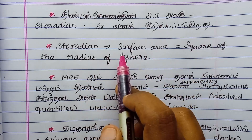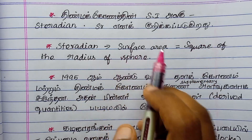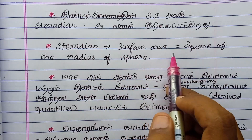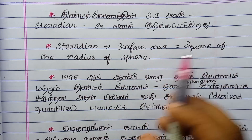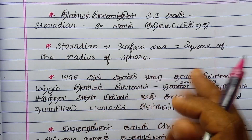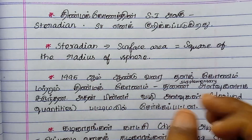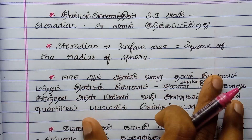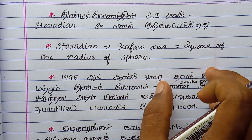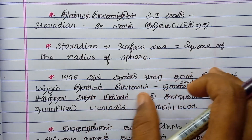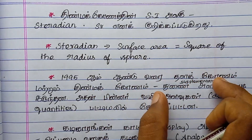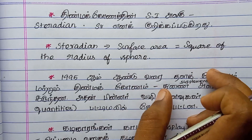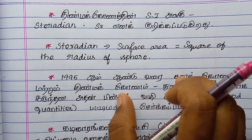The surface area of the solid angle is one part of the sphere. The surface area equals the square of the radius of the sphere — that gives one Steradian.